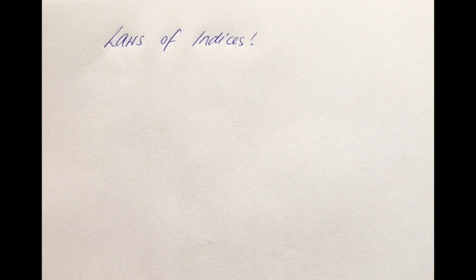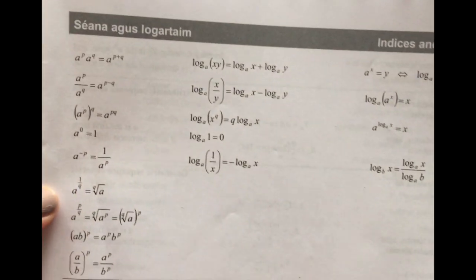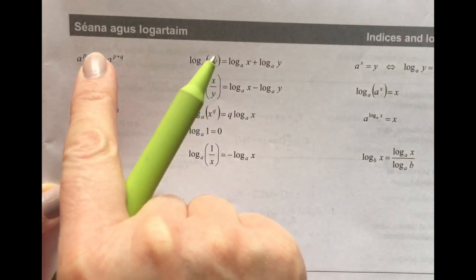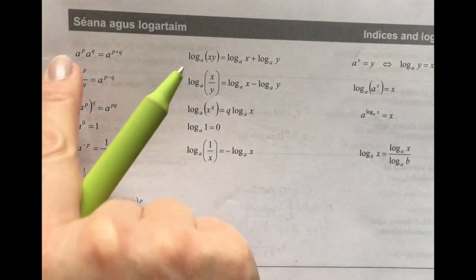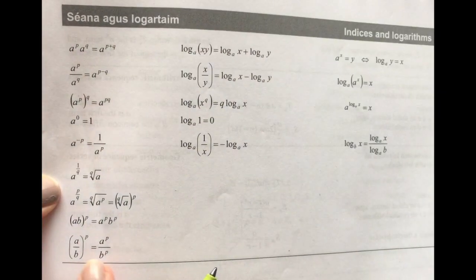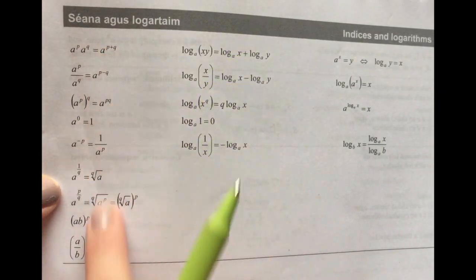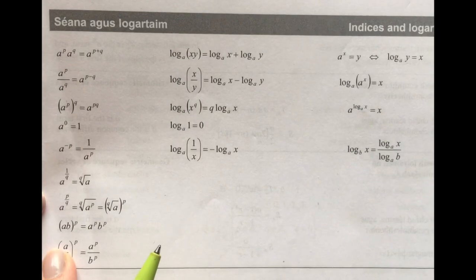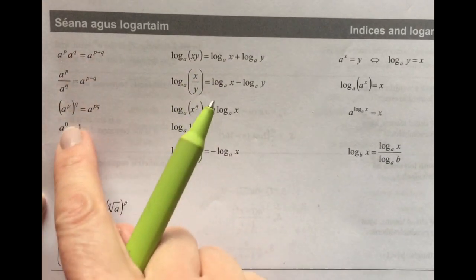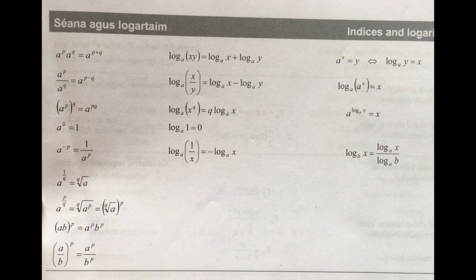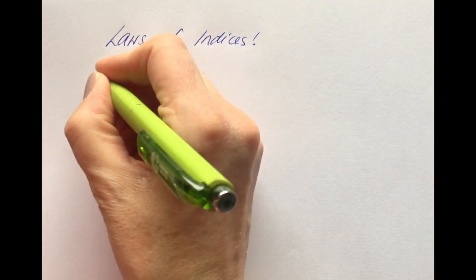In this video we're going to look at the laws of indices. The first thing I'm going to do is go to where these are listed in your log tables. If you go to indices and logarithms on page 21, you can see the list of the laws of indices on the left-hand side. I'm going to refer to them as they appear in your log tables because this is what you'll have with you in the exam. There are nine altogether.